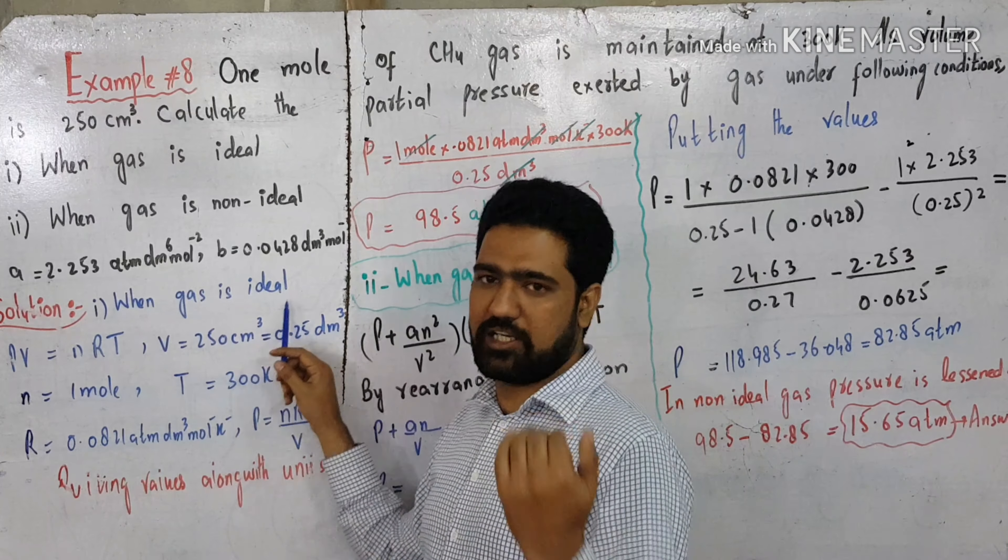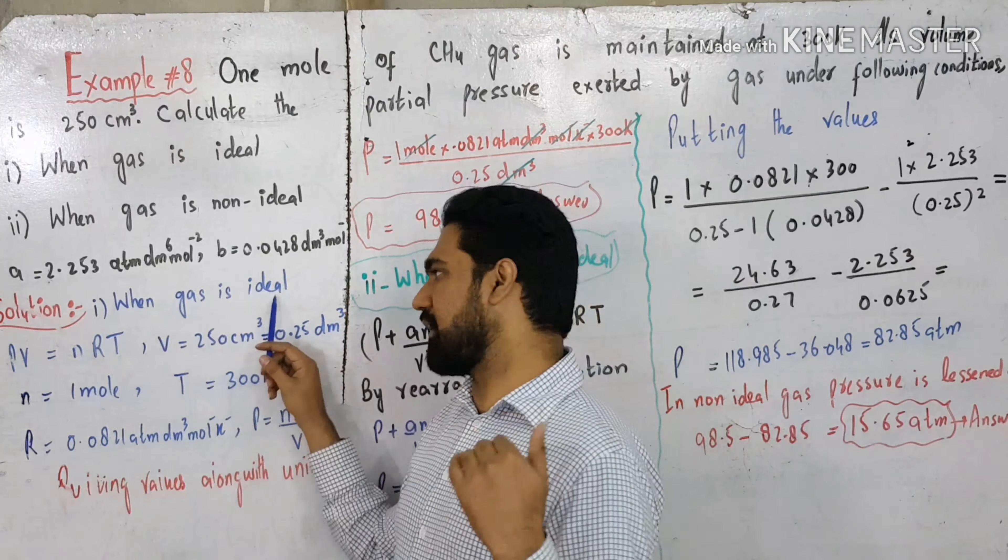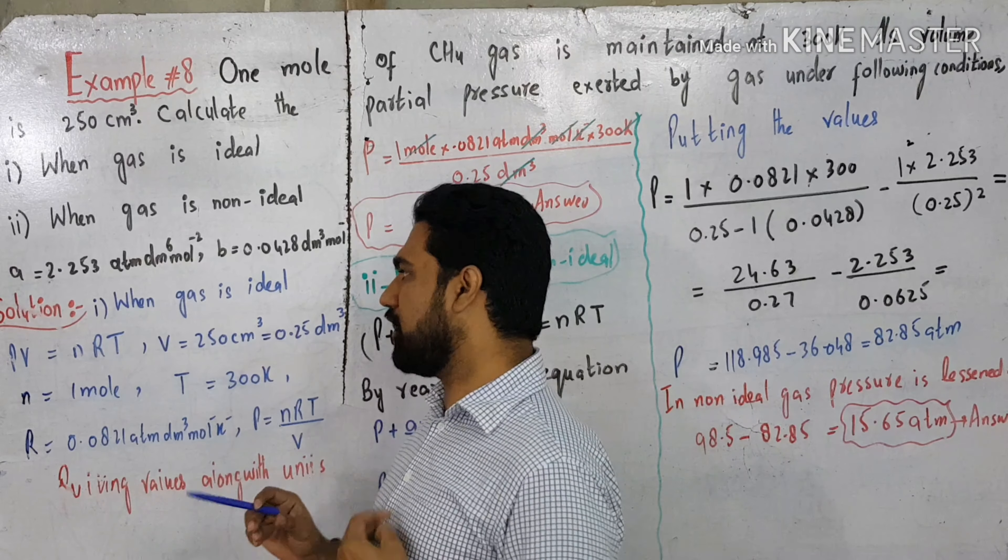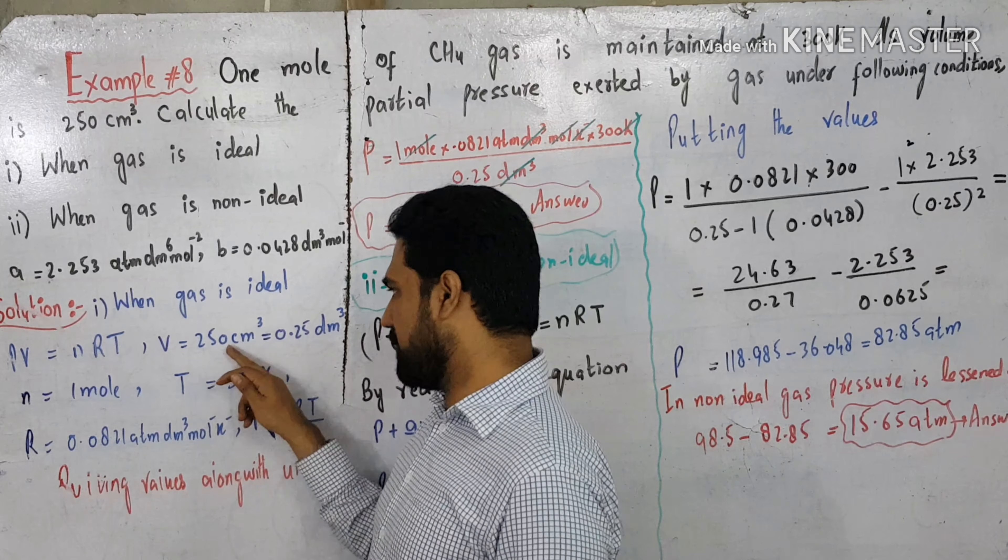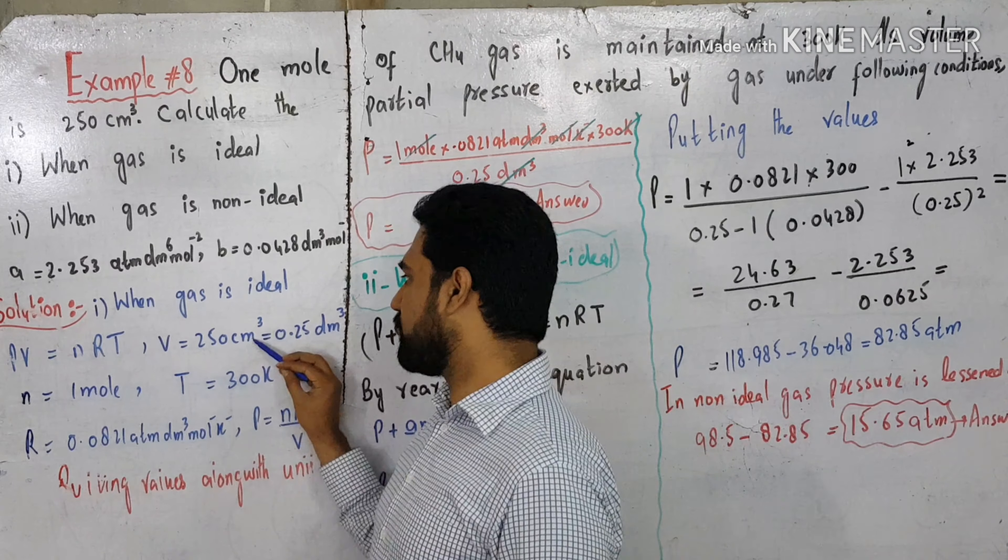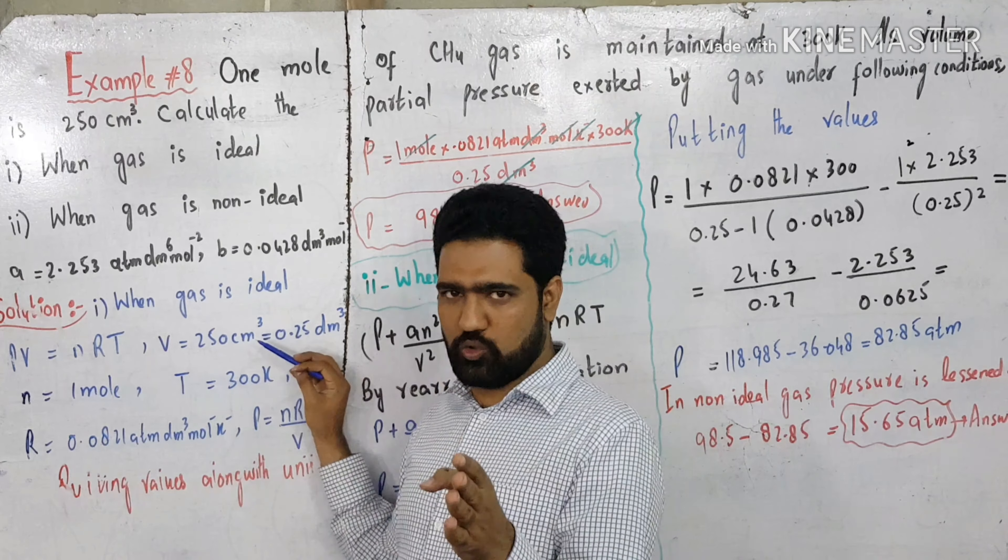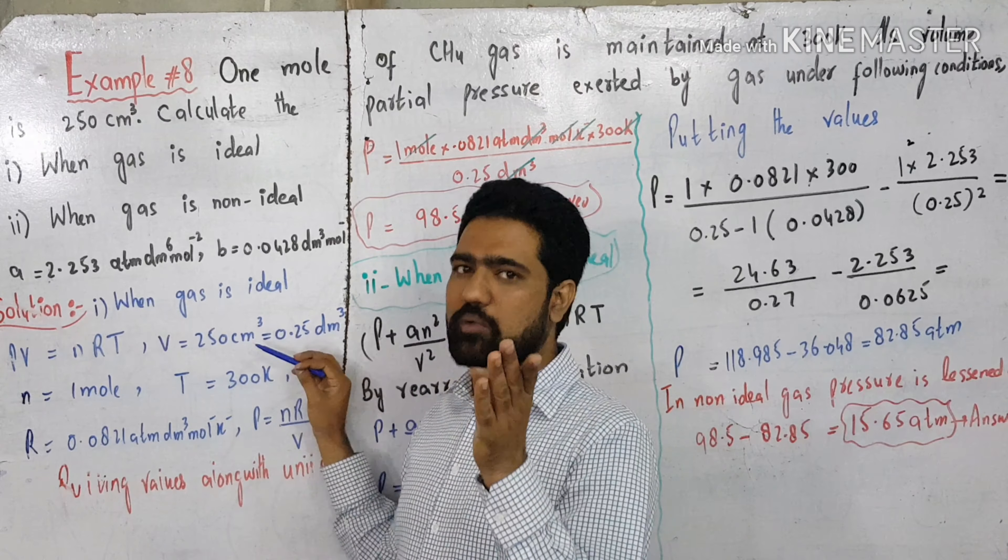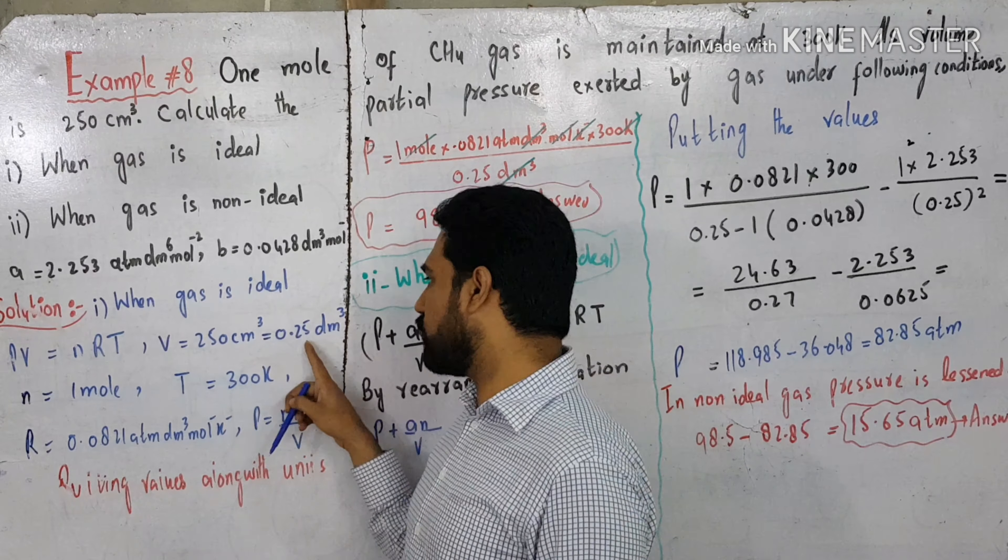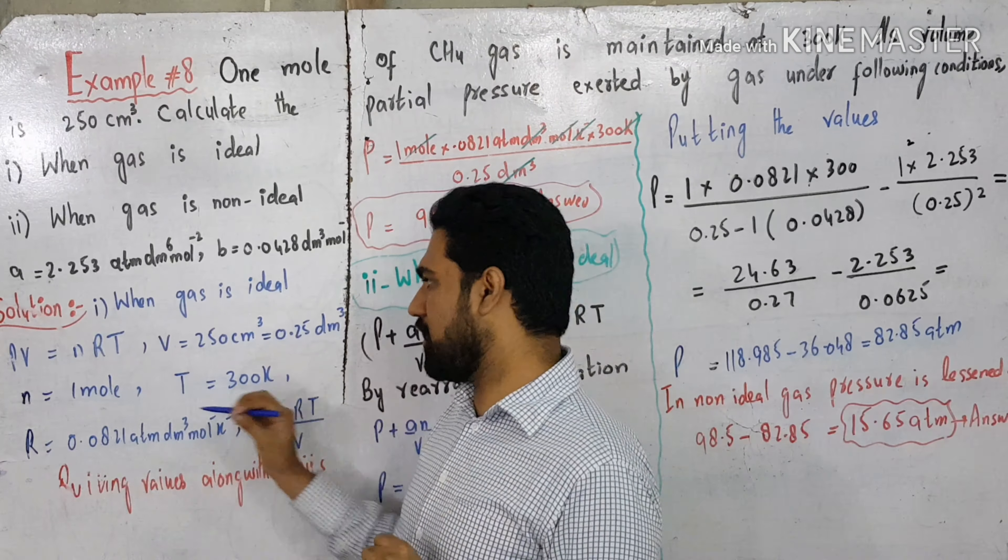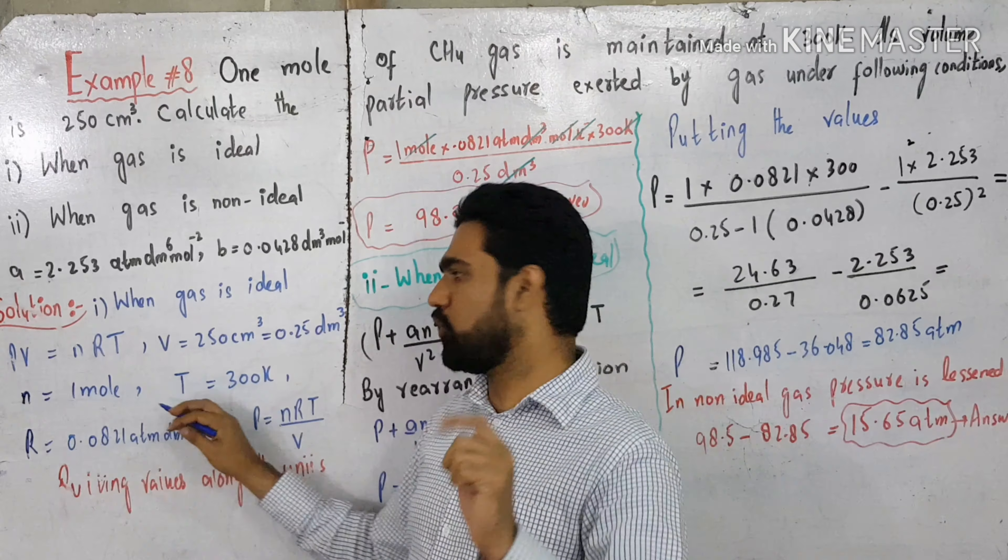The solution: when gas is ideal, the ideal gas equation is applied. That is PV equals nRT. Given is volume, 250 cm³. Convert cm³ to dm³. One dm³ is 1000 cm³. The mole is 1 mole.